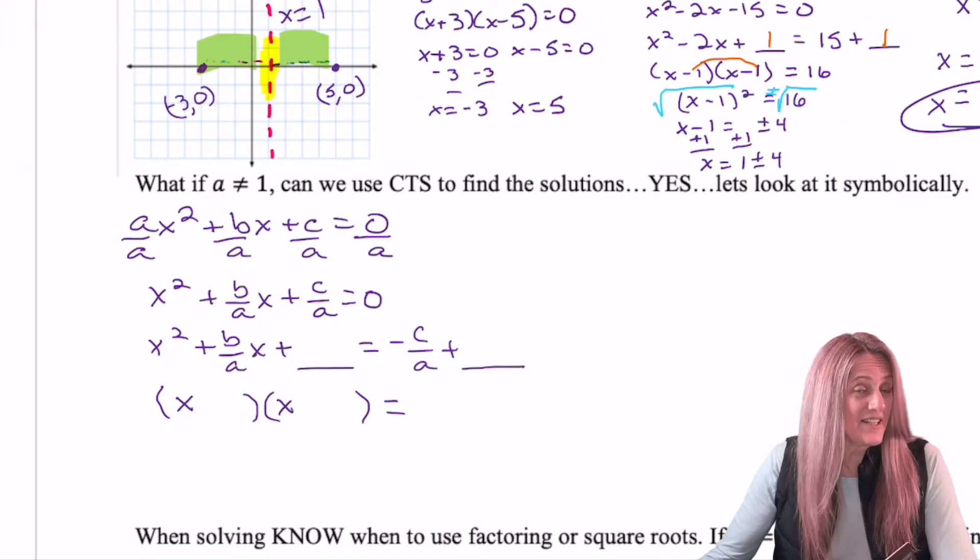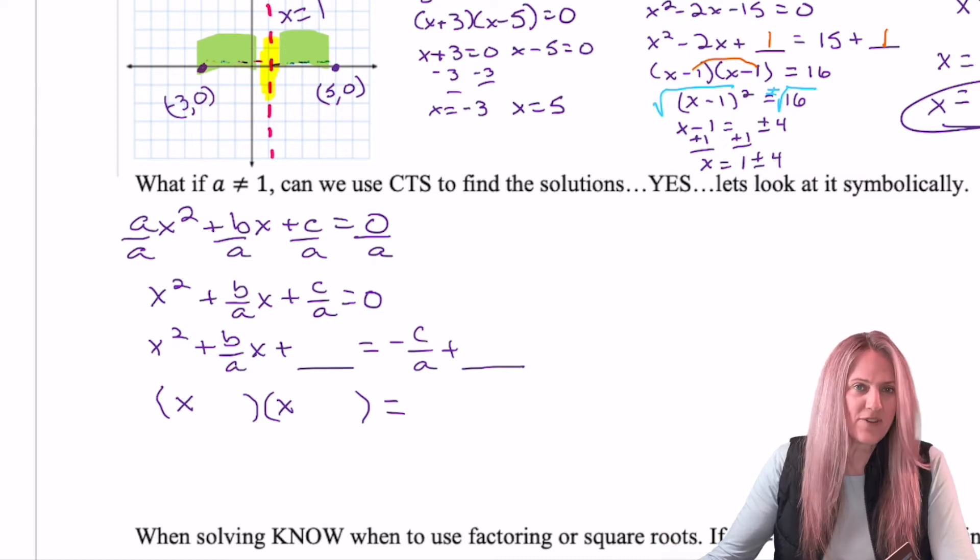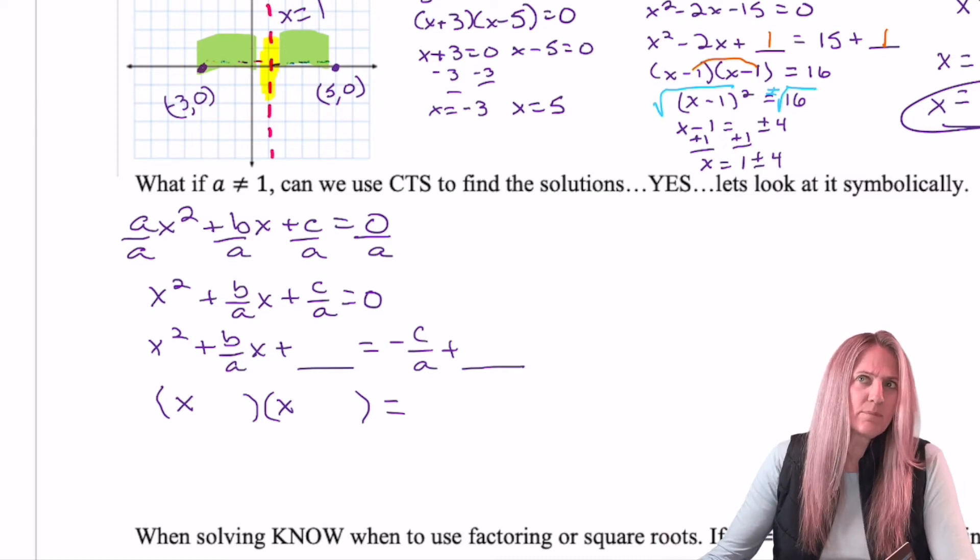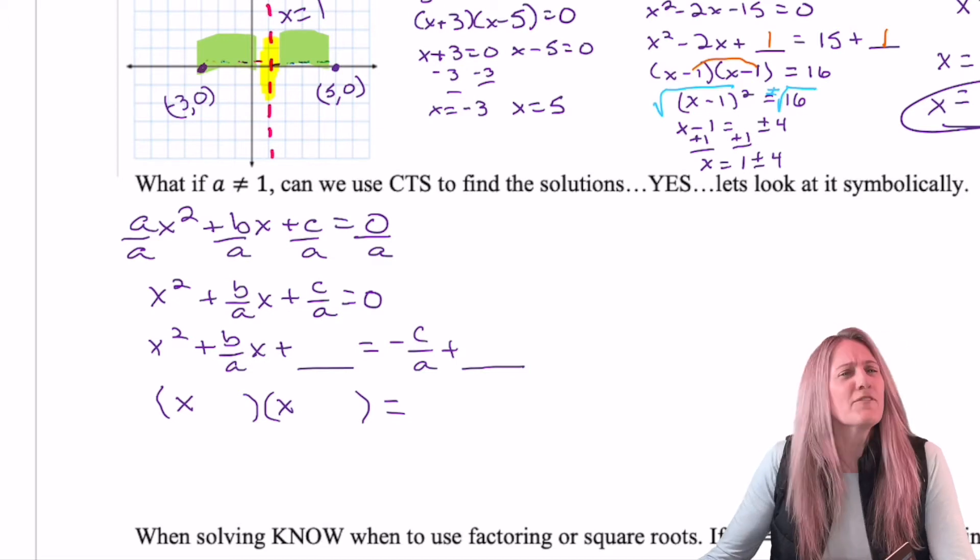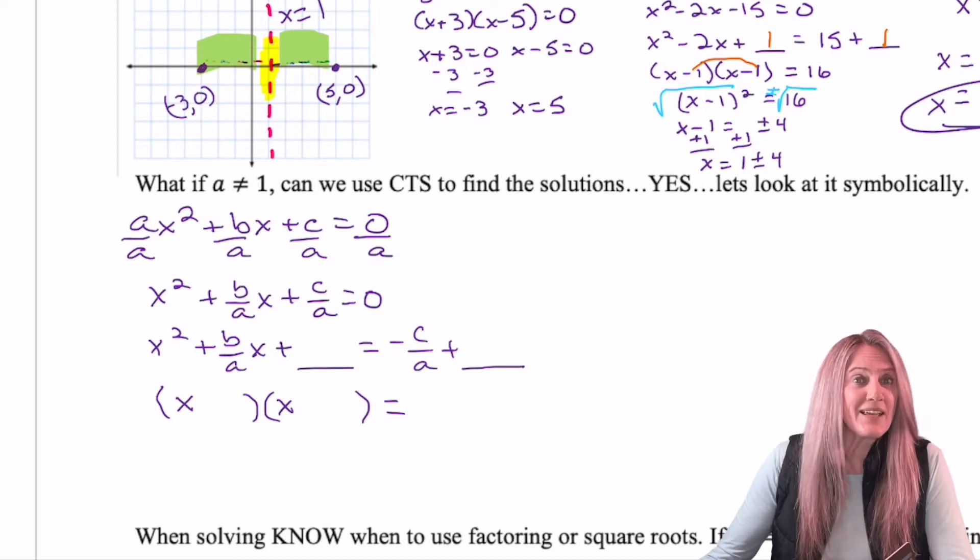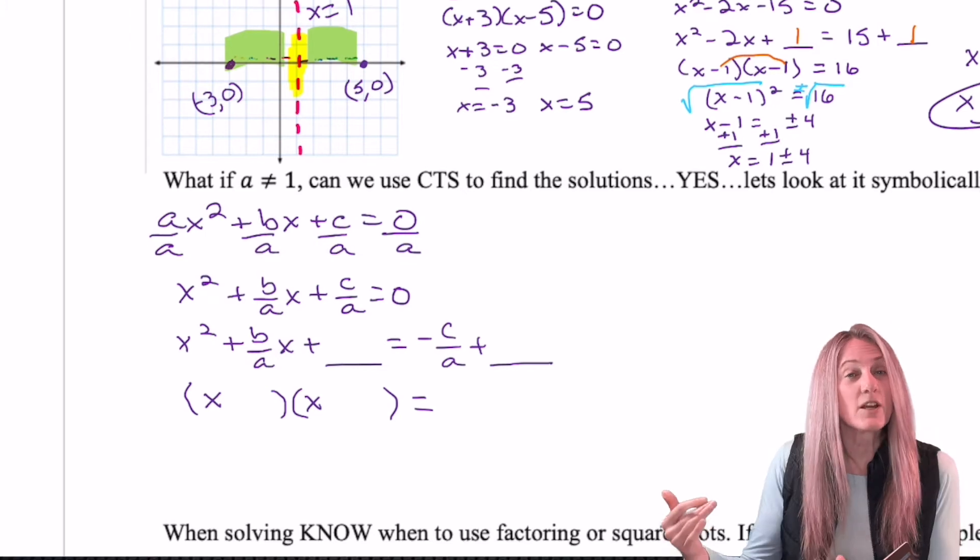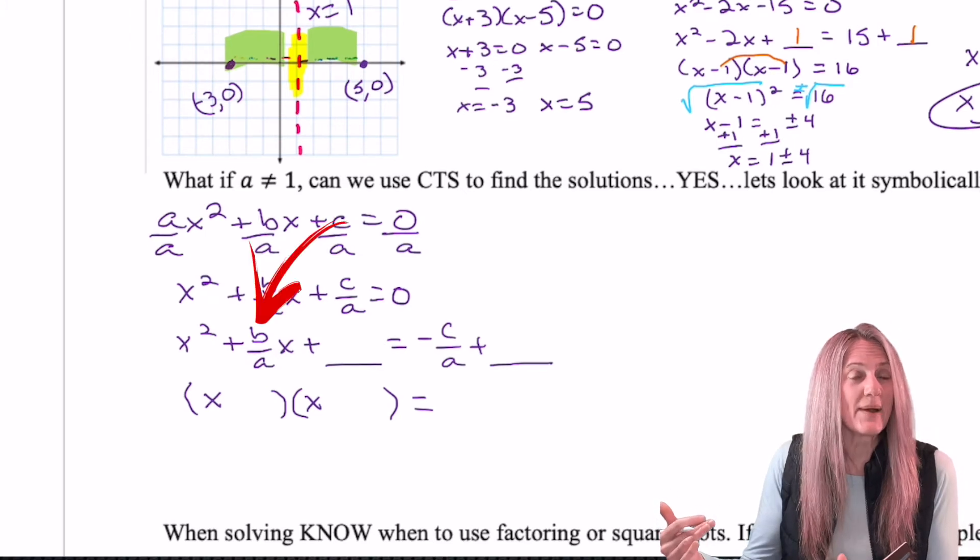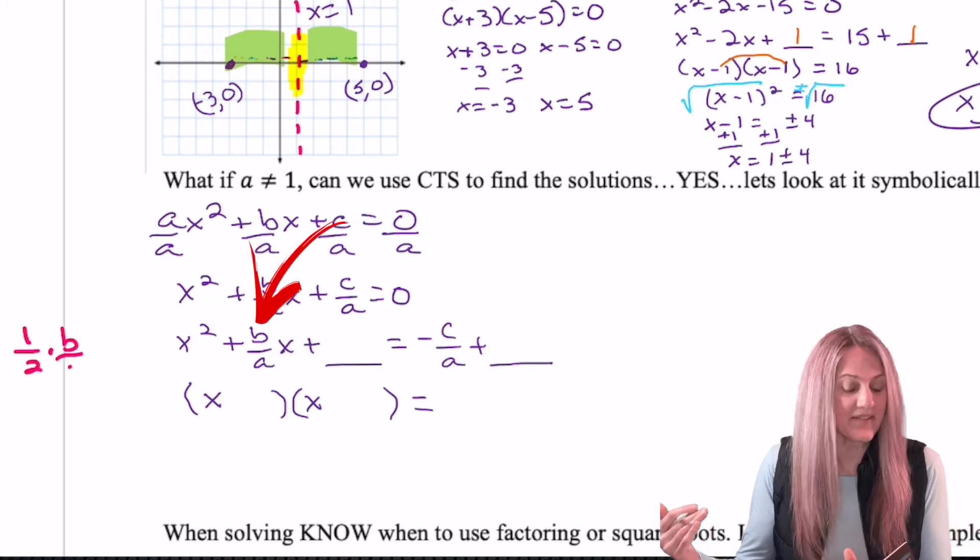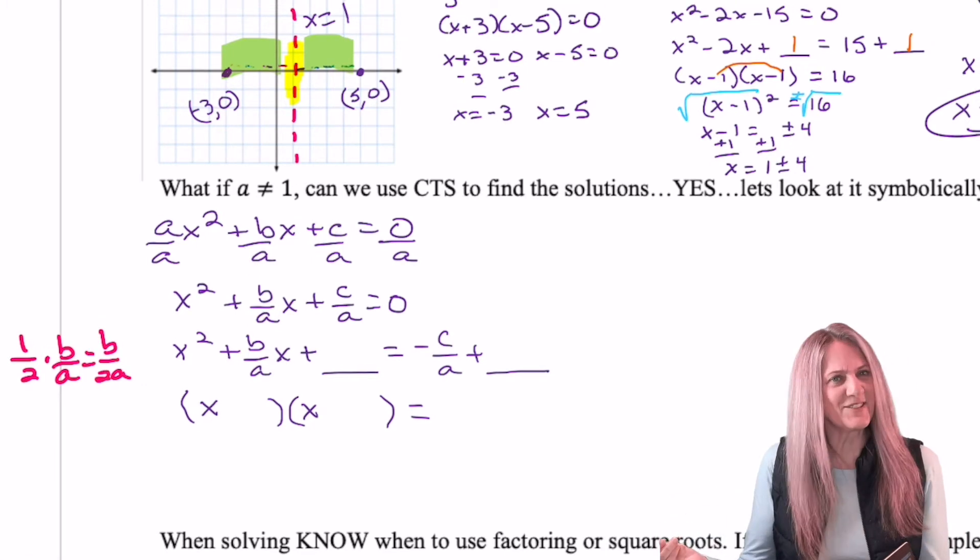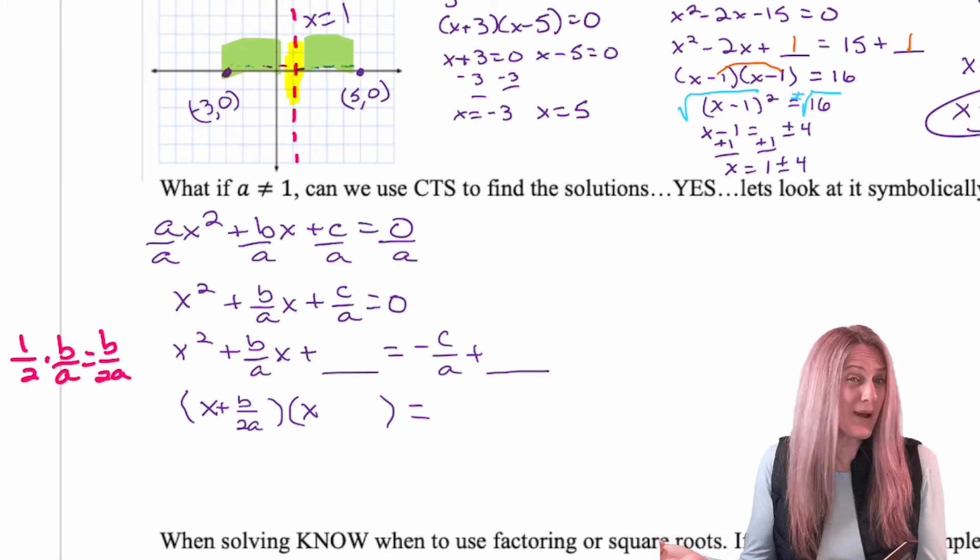Well, this is a little bit different. Normally we have a value right in front of x and we just go, oh, what plus itself equals that number? Like if it was negative 20x, then it'd be negative 10 plus negative 10. With the coefficient being b divided by a, I need to take half of that. Well, that's interesting. b divided by 2a.